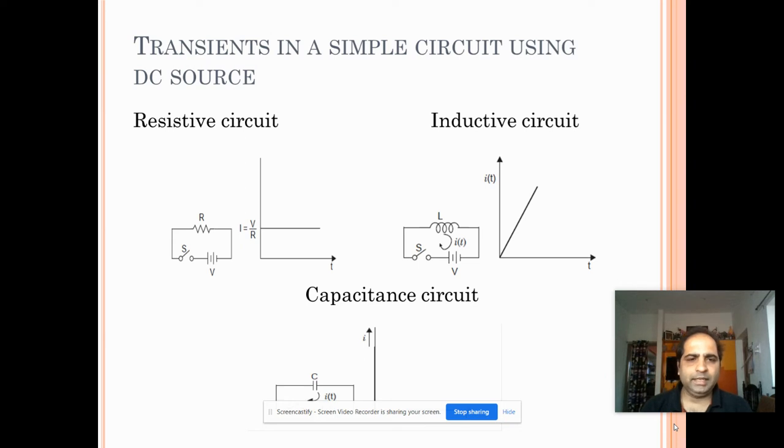To illustrate how the transients occur in a simple circuit using DC source: for a resistive circuit the graph is as shown, for inductive circuit the graph is as shown in the diagram, and for the capacitance circuit whenever a DC source is applied the graph of I versus T is as shown in the diagram.